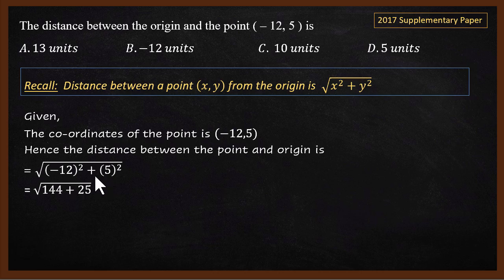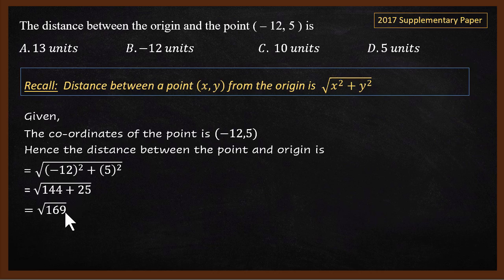What is 12² + 5²? 12² = 144 and 5² = 25. Note that (−12) × (−12) = +144 — squaring a negative number gives a positive result. So we get 144 + 25 = 169. The square root of 169 is 13. So the answer is 13, and the correct answer is A.